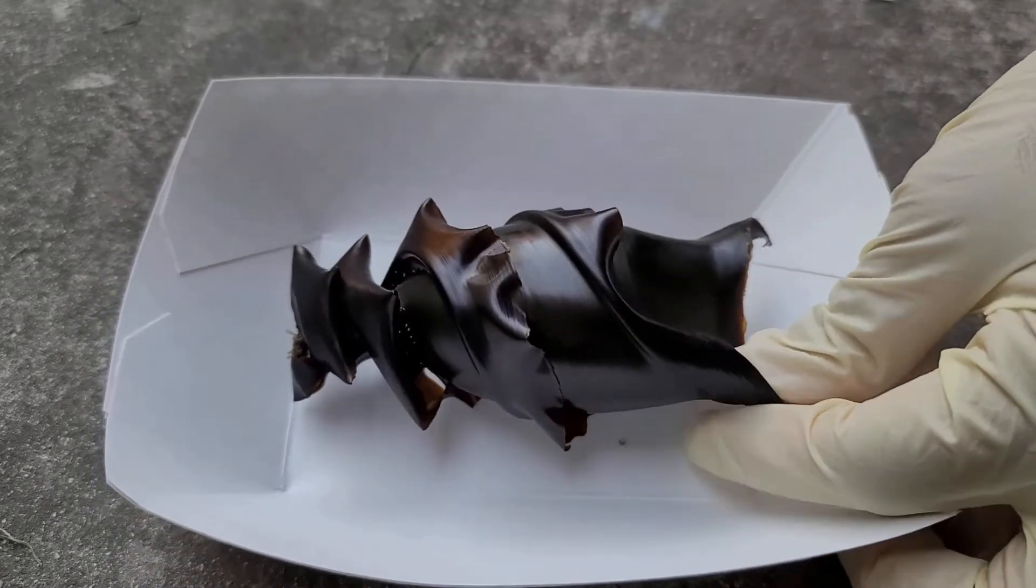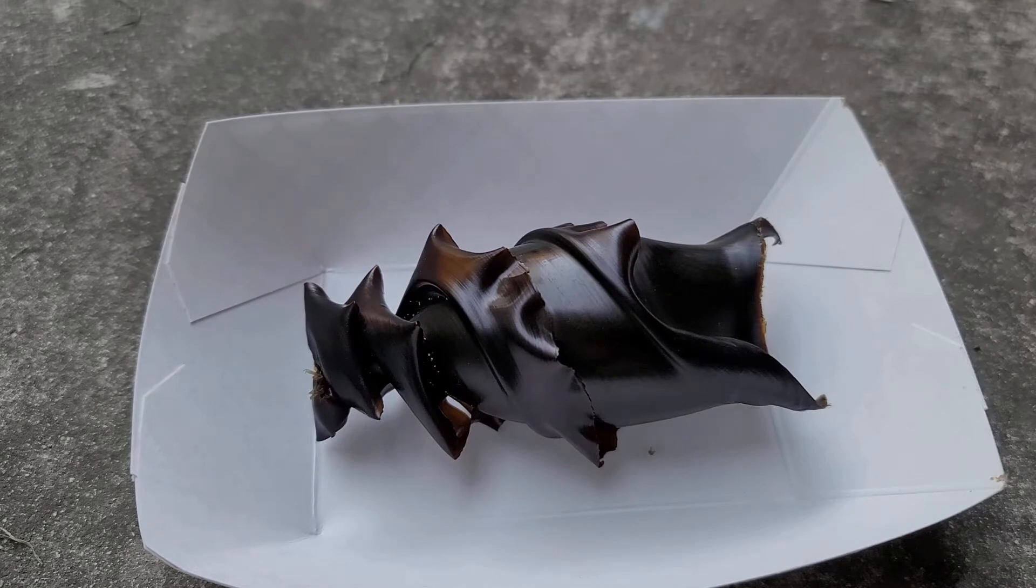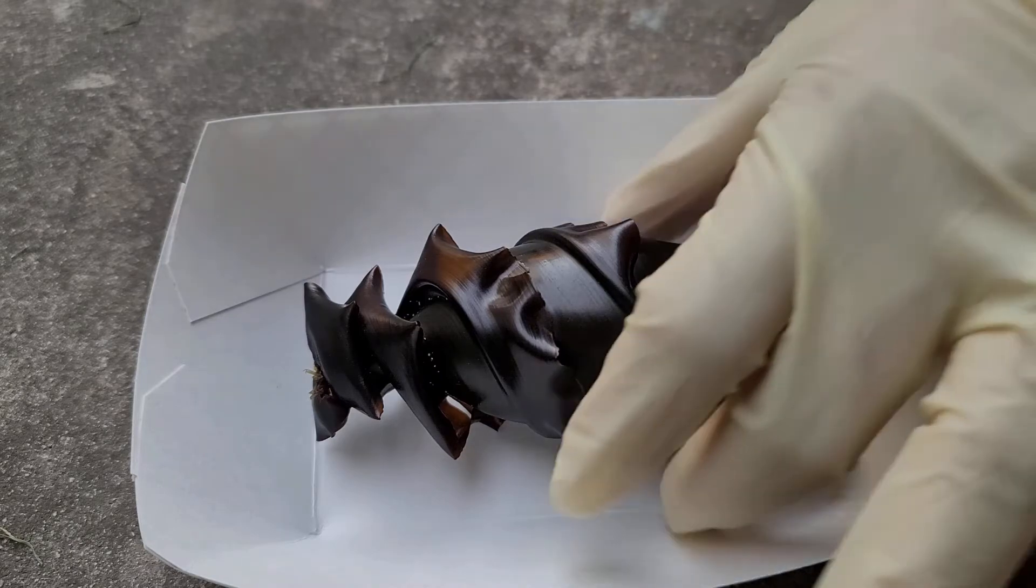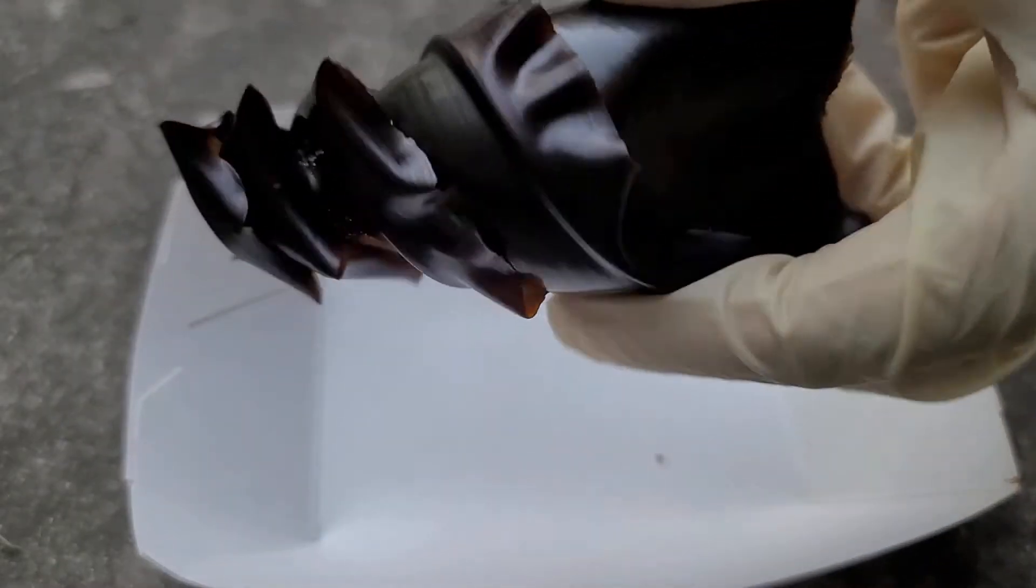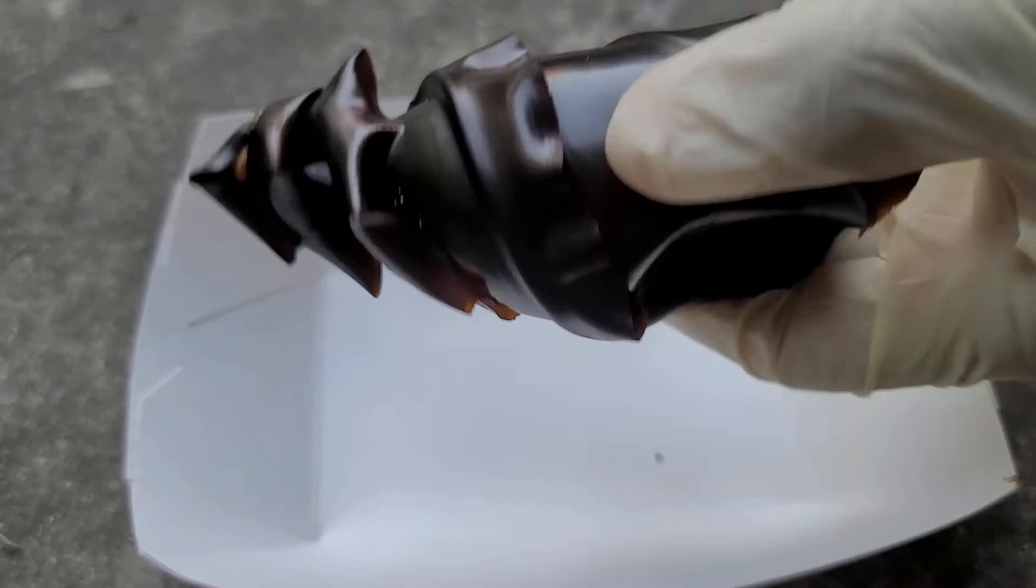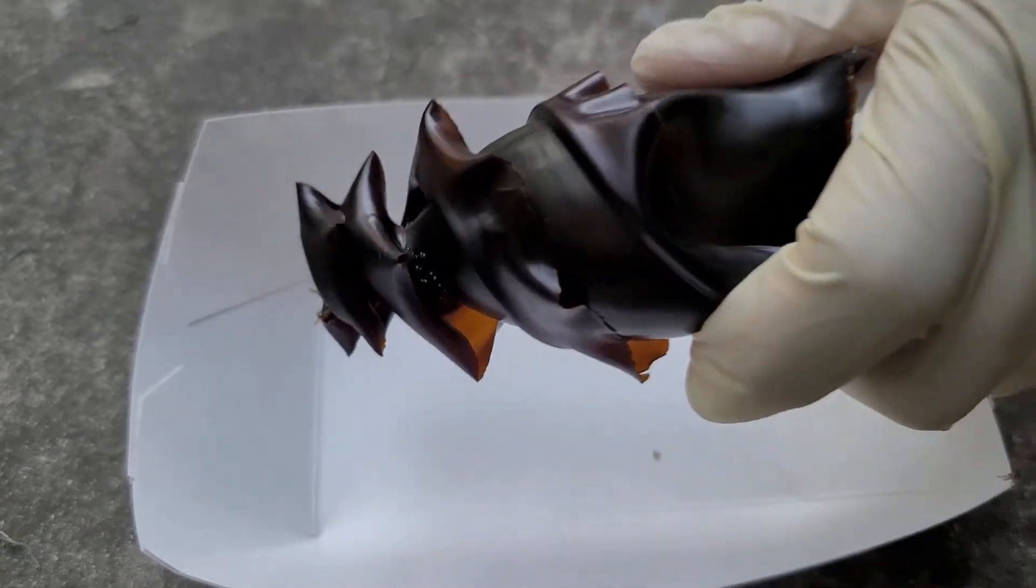Once this egg is laid, the mother takes it and finds a safe crevice to essentially corkscrew this egg into hiding until the offspring is ready to come out from the egg.